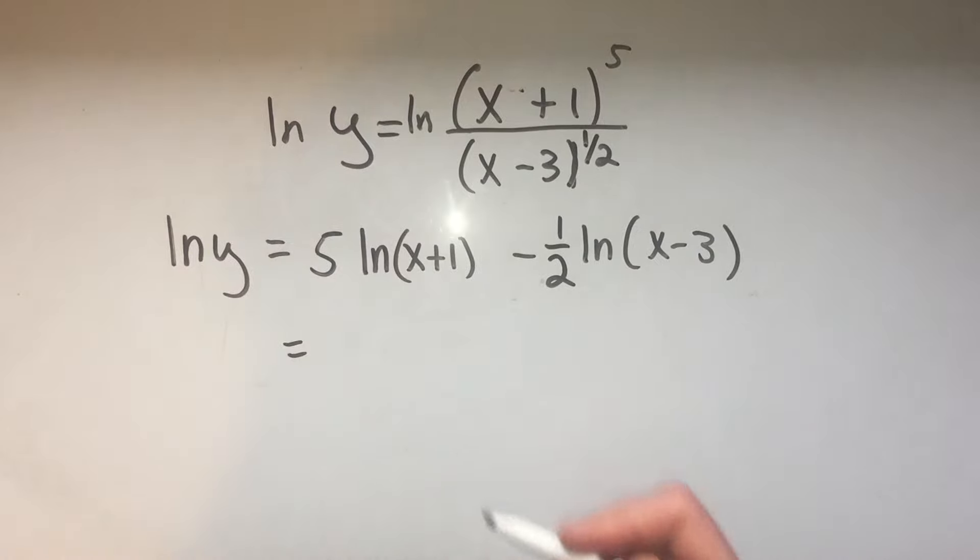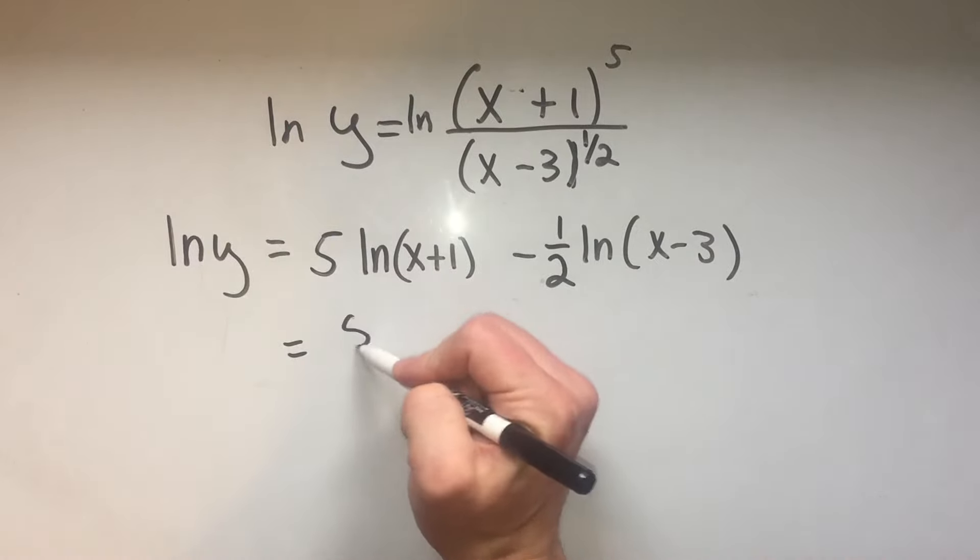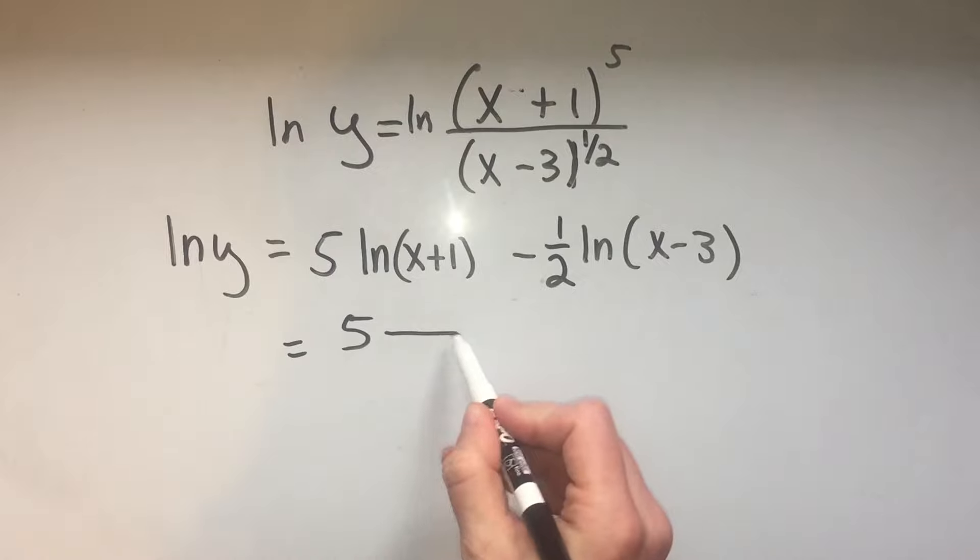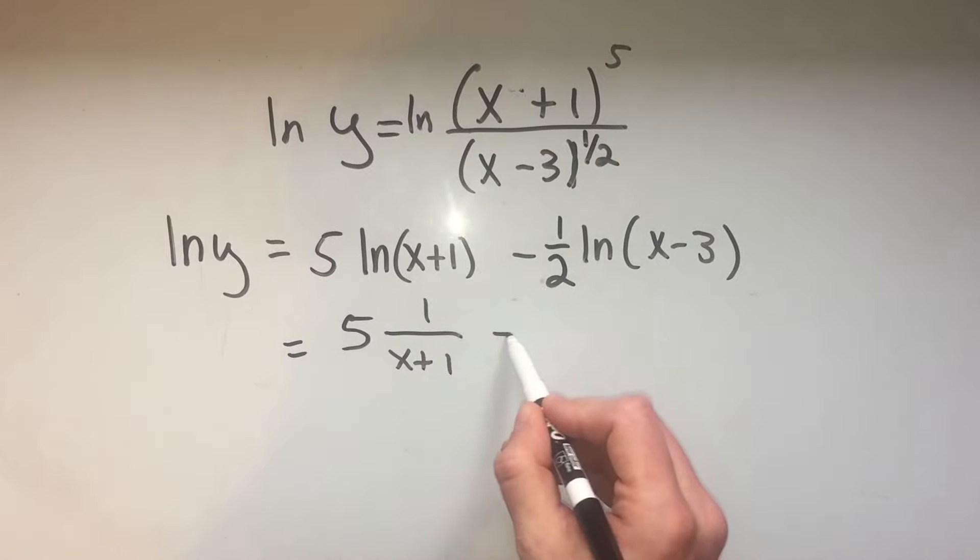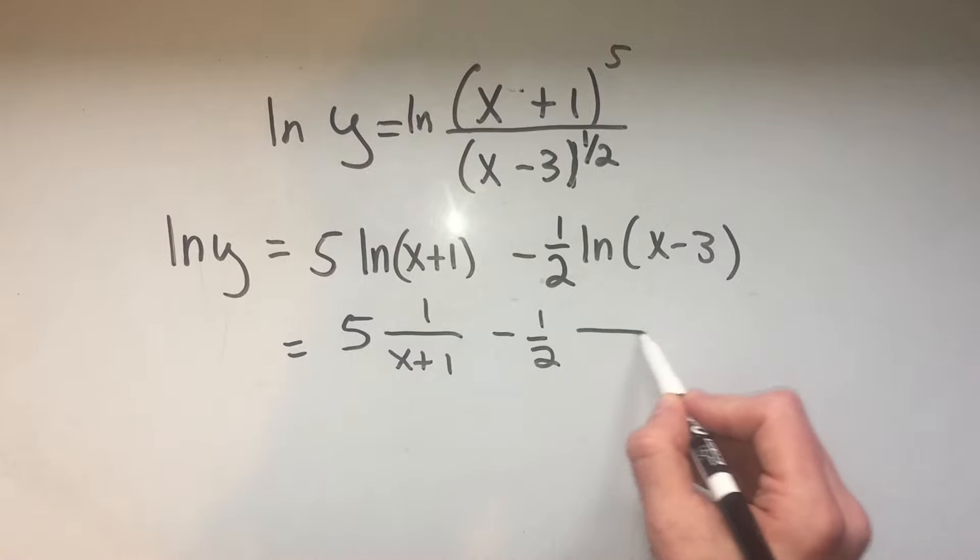Because I'll just apply the rules for the natural logarithm derivative, which is whatever's on the inside goes on the bottom, and the derivative goes on the top. Whatever's on the inside goes on the bottom, and its derivative goes on top. And I also have to take the derivative of the left-hand side.